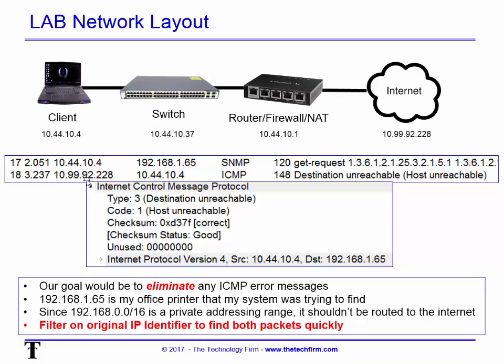The ISP's device at 10.99.92.228 comes back and says destination unreachable — host unreachable. So the goal is to eliminate these error messages, because this is what the management monitoring box is probably seeing. The 192.168.0.0 range is a private addressing range and should not be routed to the internet.